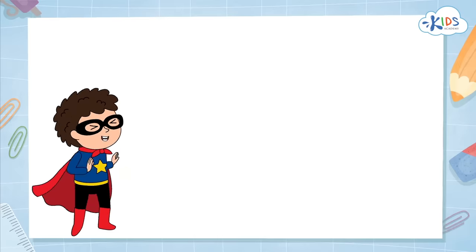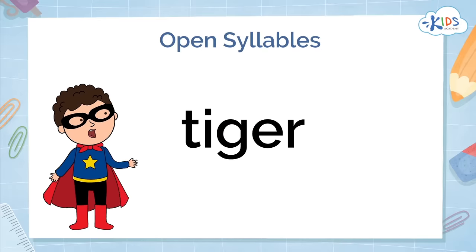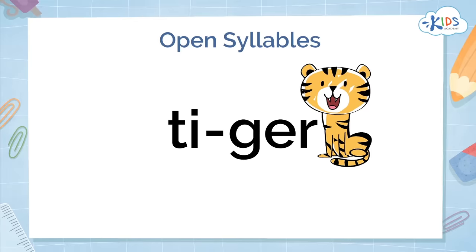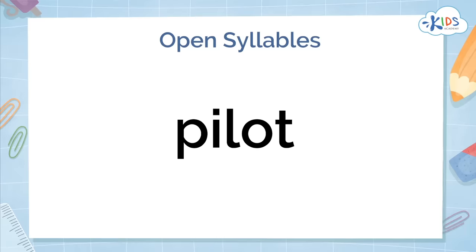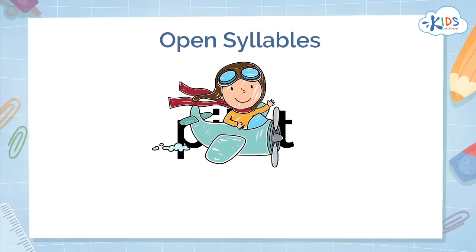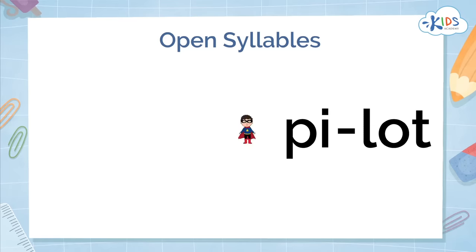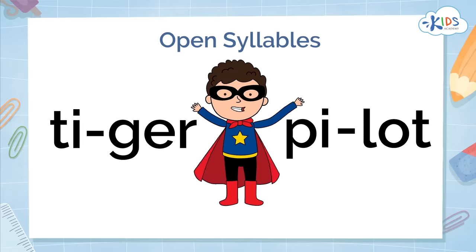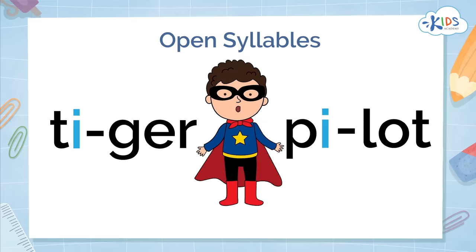First, let's talk about open syllables. These are syllables that end with a vowel, like tiger and pilot. The first syllables in both of those words are open, because they end with a vowel.